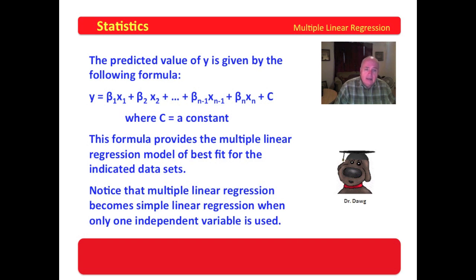And notice that multiple linear regression becomes simple linear regression when you have only one independent variable. Because what happens with one independent variable is all of this stuff right here from beta 2 all the way up to beta n goes away. And you have a value times the variable plus C when you only have one variable. So simple linear regression is multiple linear regression with only one independent variable.